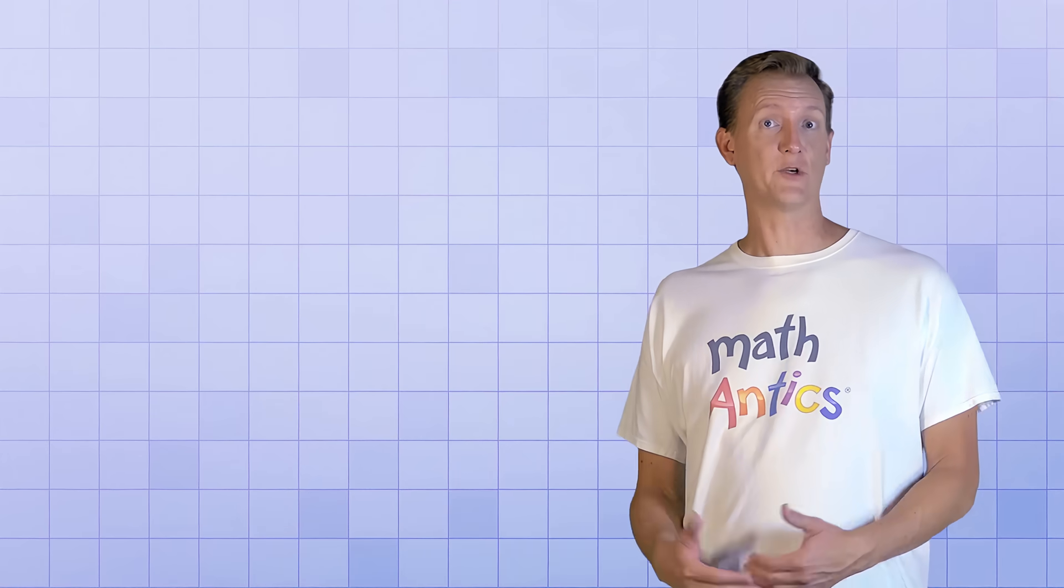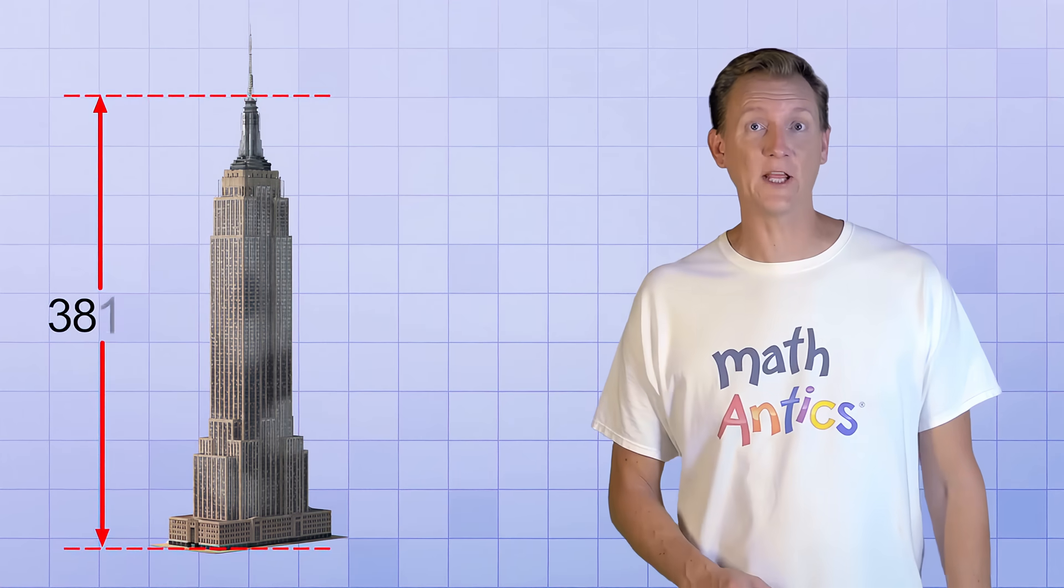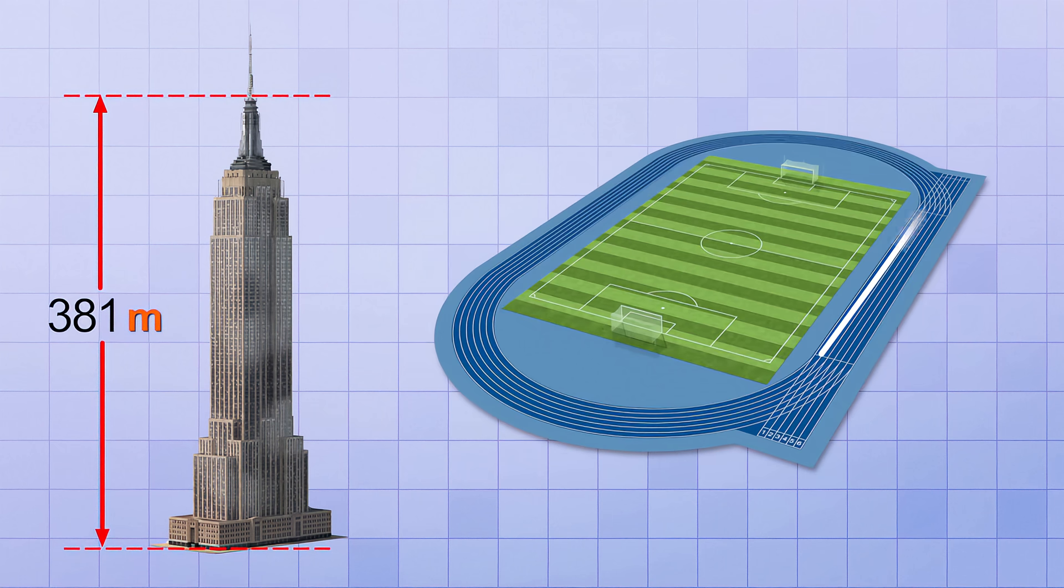Meters are great for measuring distances like the height of a building. This one is 381 meters tall. Or the distance around a racetrack, which is 400 meters.